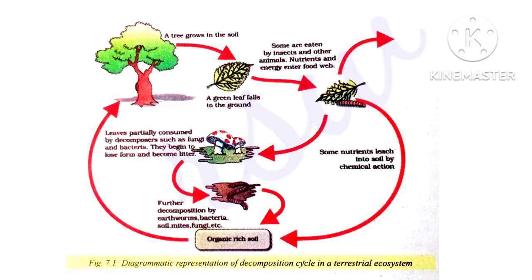Nutrients and energy enter the food web. Some nutrients leach into the soil by chemical action. Leaves are partially consumed by decomposers such as fungi and bacteria, and they begin to lose form and become litter.